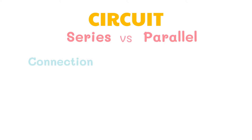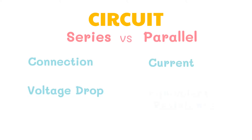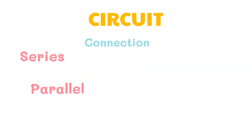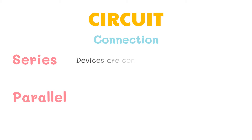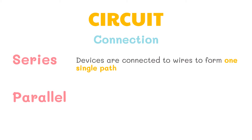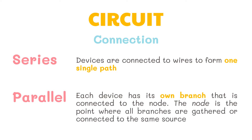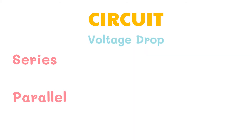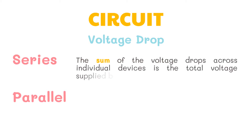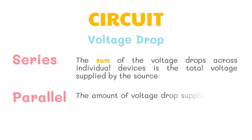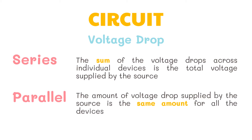Let's differentiate series and parallel circuits in terms of connection, voltage drop, current, and equivalent resistance. In a series circuit, devices are connected to wires to form one single path. In a parallel circuit, each device has its own branch connected to a node — the point where all branches are gathered or connected to the same source. In a series circuit, the sum of voltage drops across individual devices equals the total voltage supplied by the source. In a parallel circuit, the voltage drop from the source is the same for all devices.